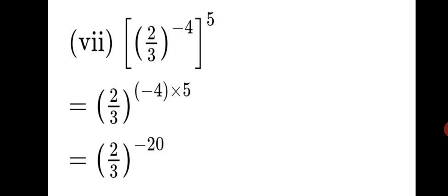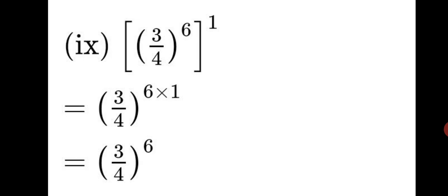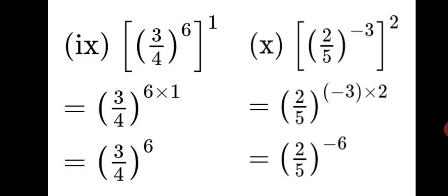You just have to multiply the powers and keep the base as it is. Eighth sum: (5/8) raised to 3, the whole raised to −2: 3 × (−2) = −6, so the answer is (5/8) raised to −6. Ninth sum: (3/4) raised to 6, the whole raised to 1: 6 × 1 = 6, so the answer is (3/4) raised to 6. Tenth sum: (2/5) raised to −3, the whole raised to 2: (−3) × 2 = −6, so the answer is (2/5) raised to −6. This completes Question 1.